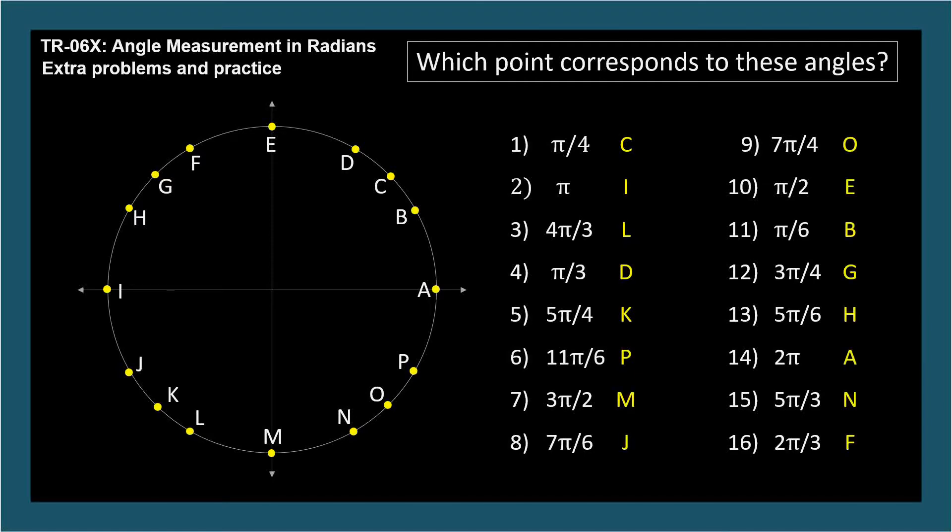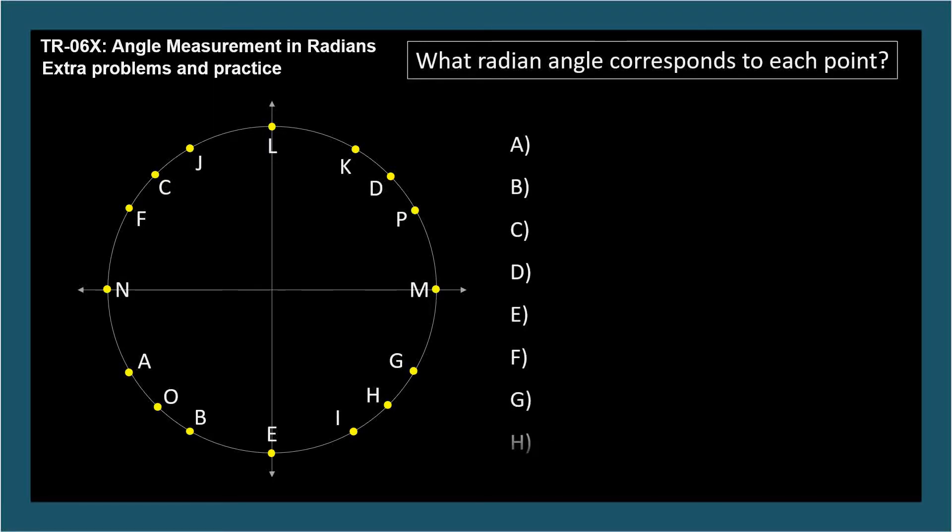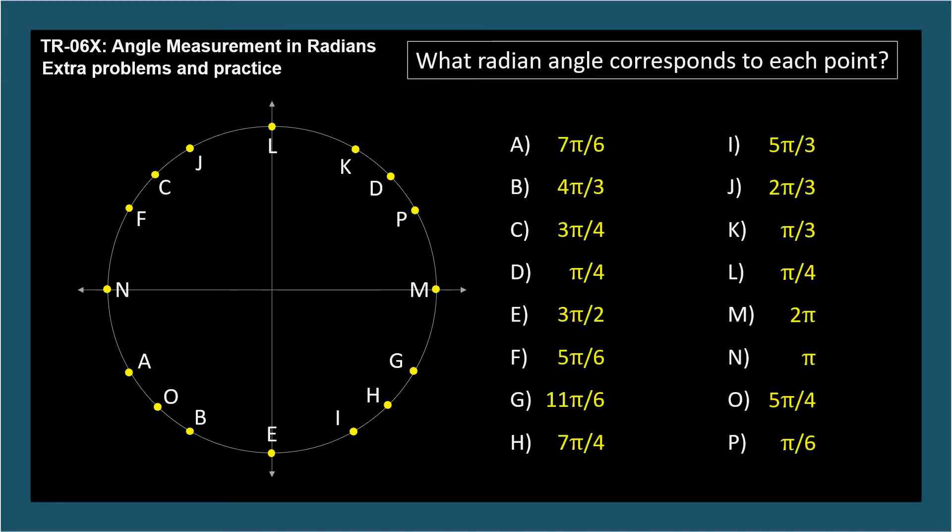Now let's go the other way. For each angle, a through p, identify the corresponding angle in radians. Just like with degrees, you should know the angle measurement for each common angle point, and know which point corresponds to each common angle measurement.